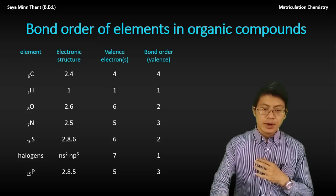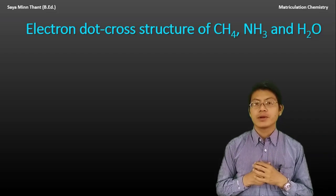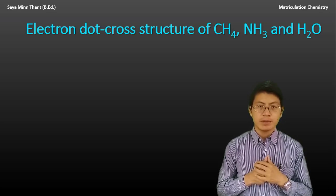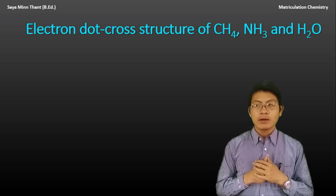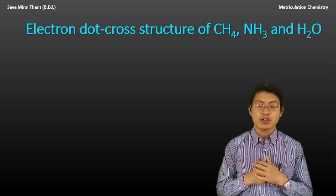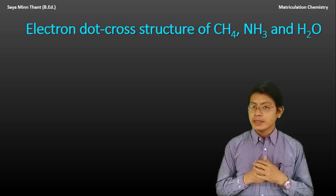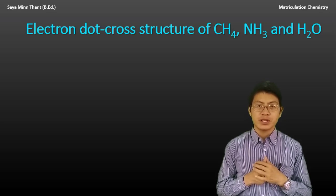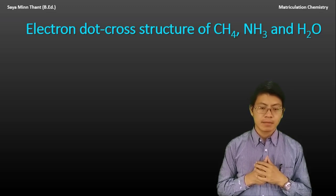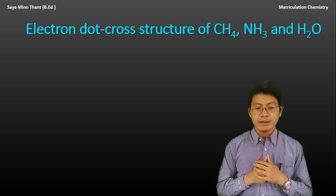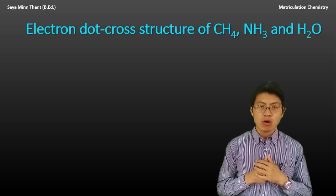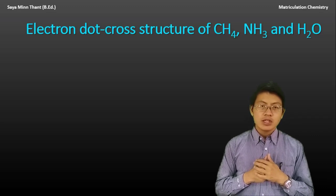Now take a look at the graphic structure formula. Graphic structure formula. Now take a look at CH4 (methane), NH3, H2O (water), and CH4O. Carbon atom, hydrogen atom, nitrogen atom, H3O.